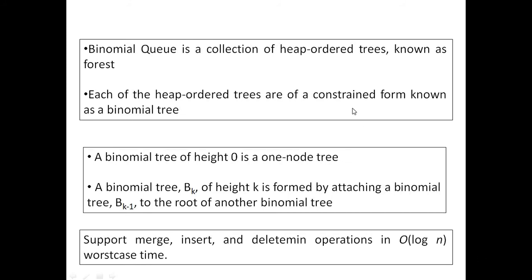Binomial queue is a collection of heap order trees known as forest. Each of the heap order trees are of a constrained form known as a binomial tree. A binomial tree of height 0 is a one node tree. A binomial tree vk of height k is formed by attaching a binomial tree vk minus 1 to the root of another binomial tree.